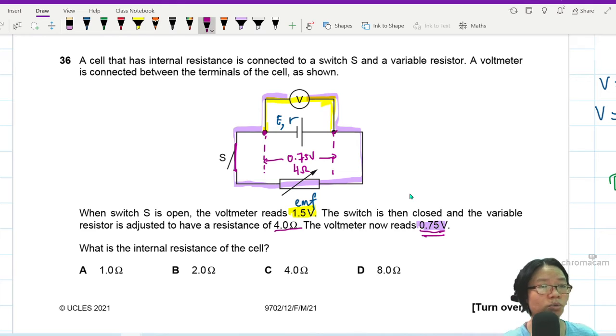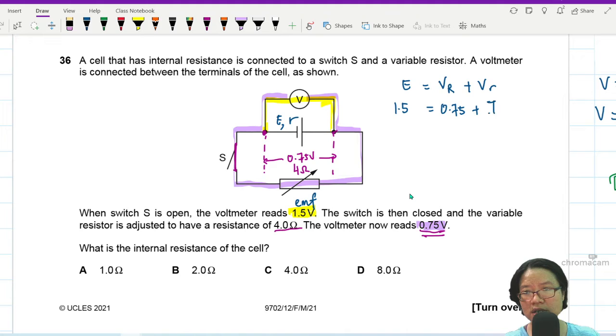Okay, so you want to find the internal resistance. We can write an equation: EMF is equal to outside volt plus inside volt, conservation of energy. Okay, EMF is 1.5, outside volt is 0.75. Inside volt, you can use IR.